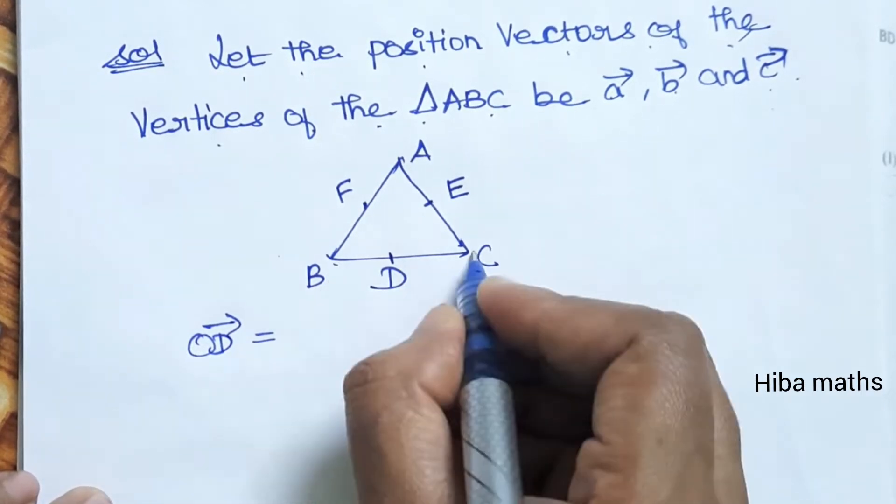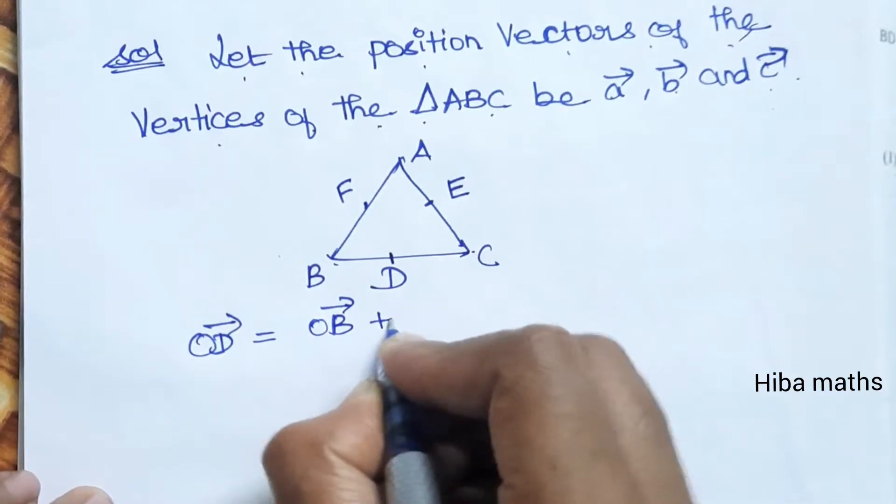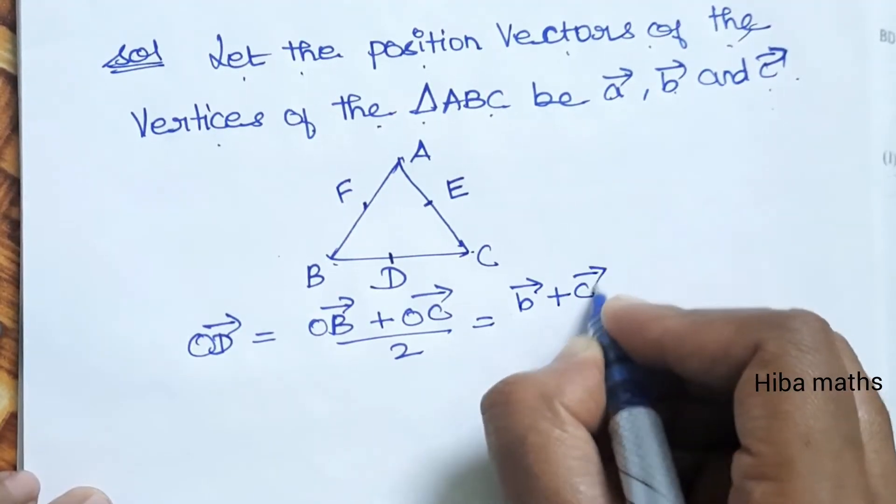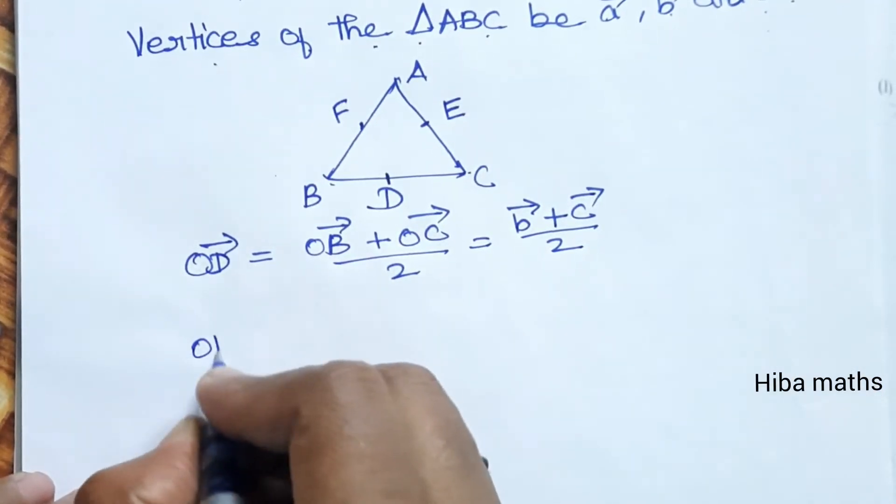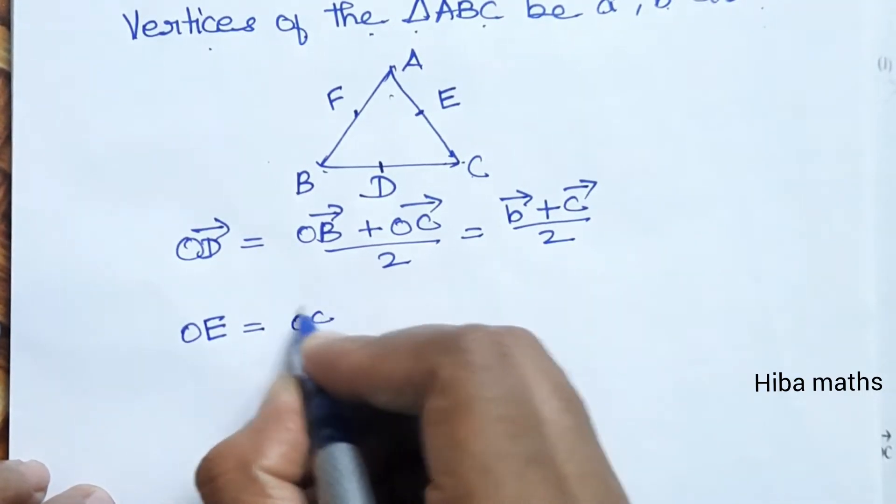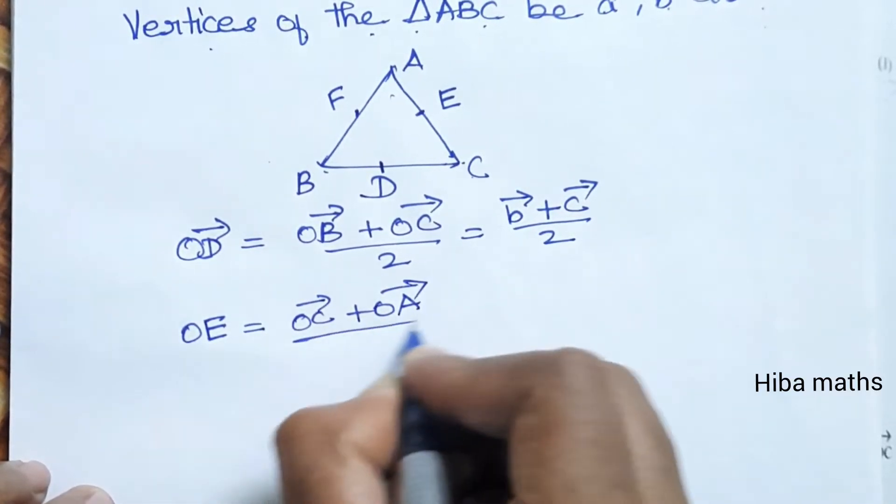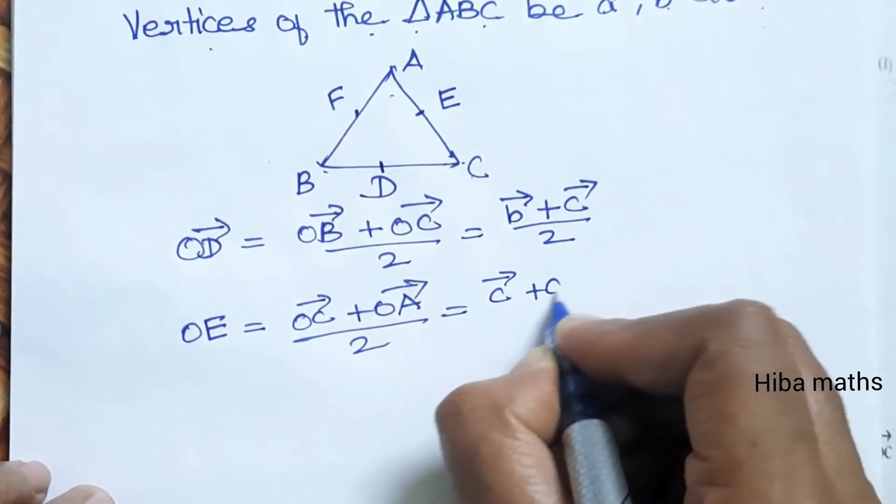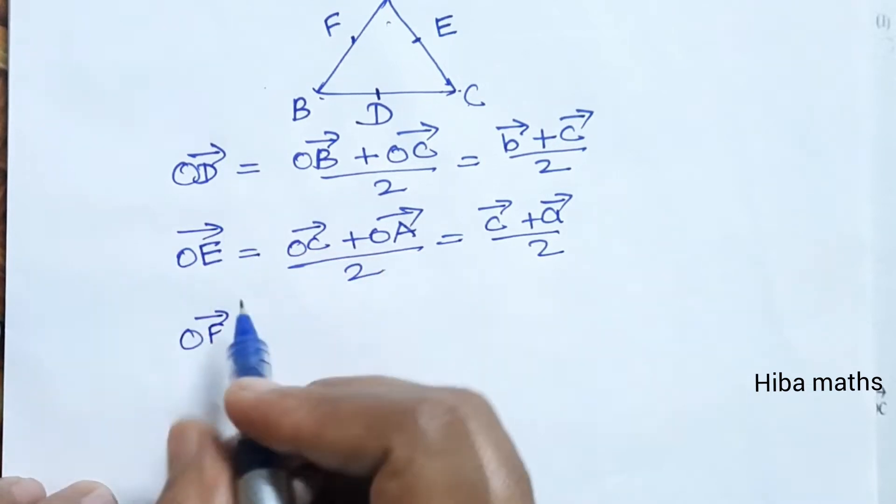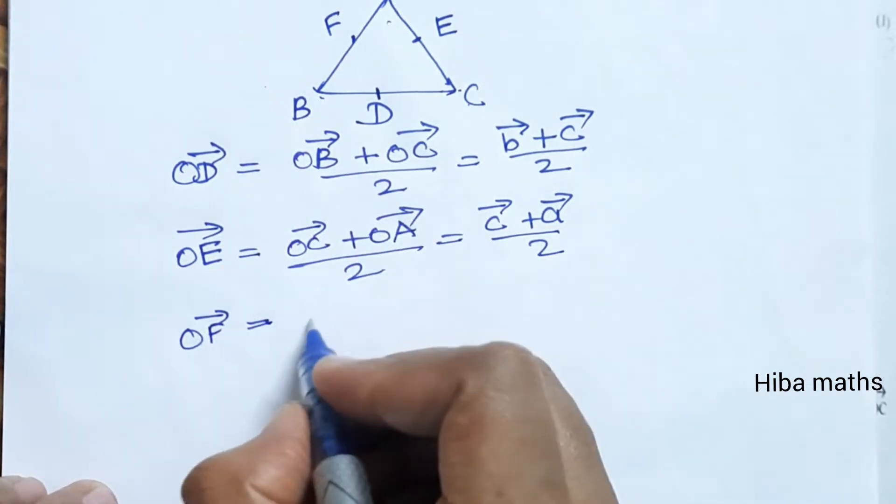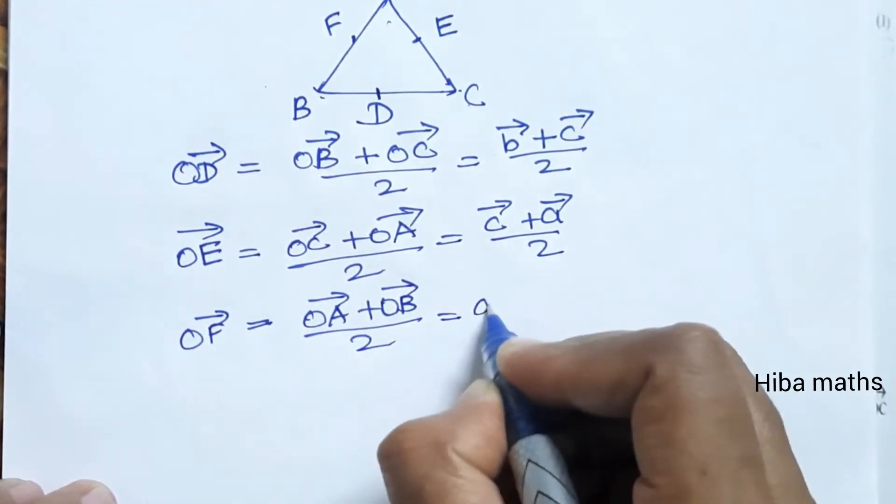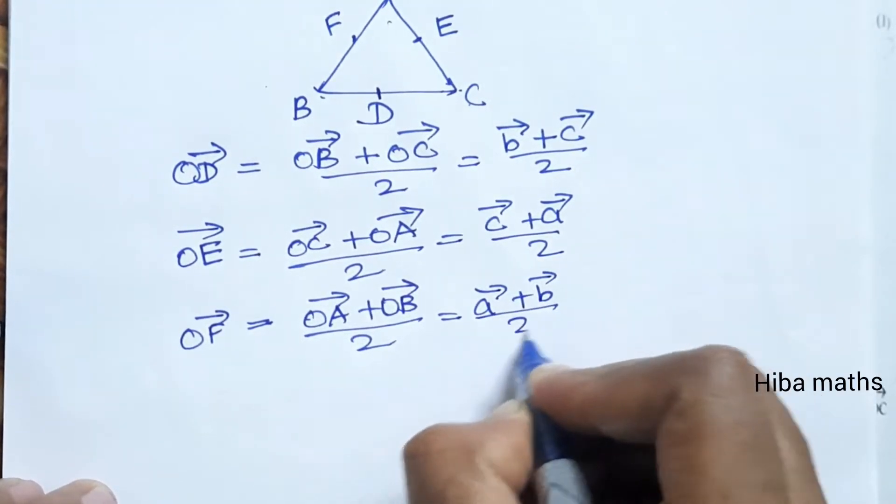Let's find OD vector. OD vector is the midpoint of BC, so OB vector plus OC vector divided by 2, that is B vector plus C vector divided by 2. Similarly, OE vector equals C vector plus A vector divided by 2, and OF vector equals A vector plus B vector divided by 2.